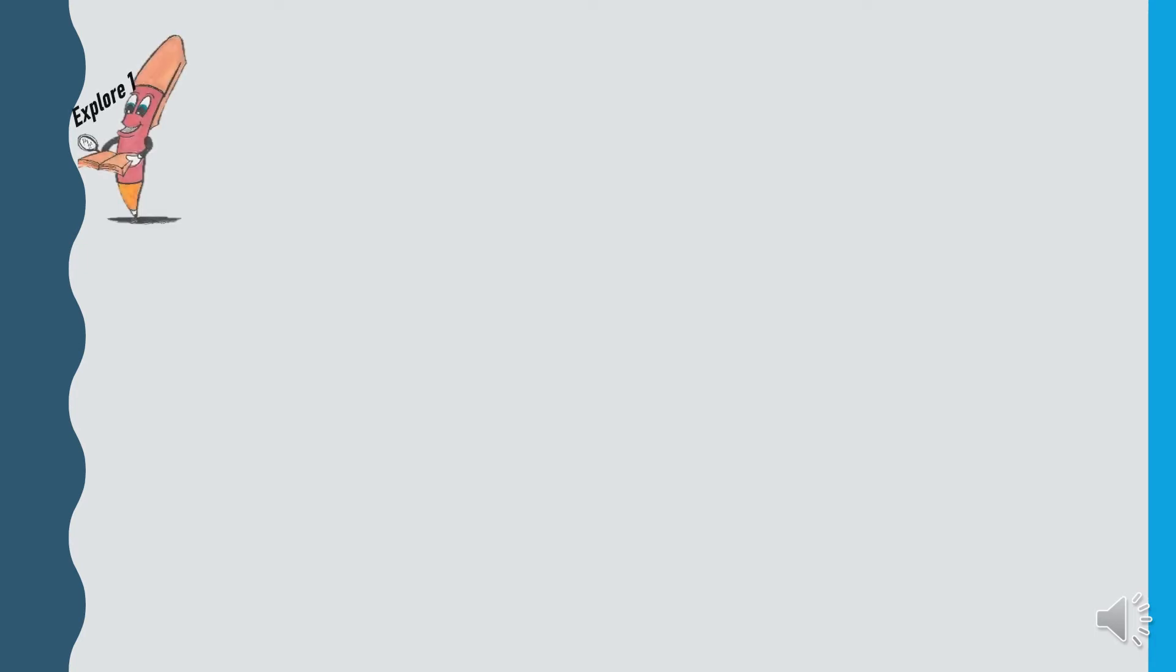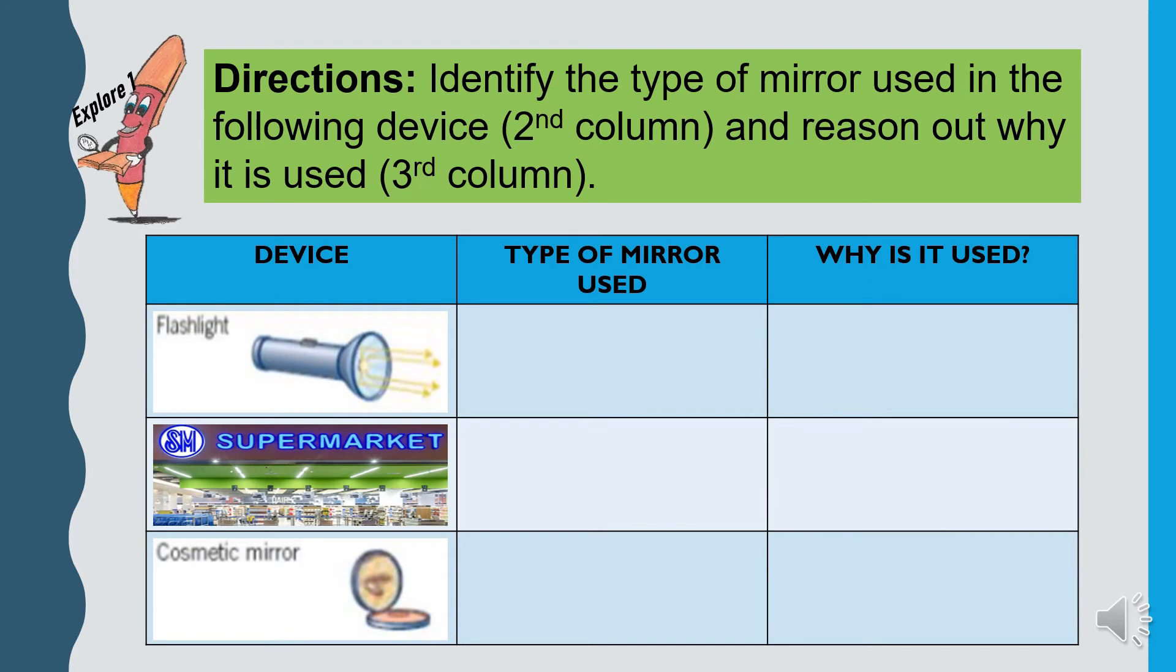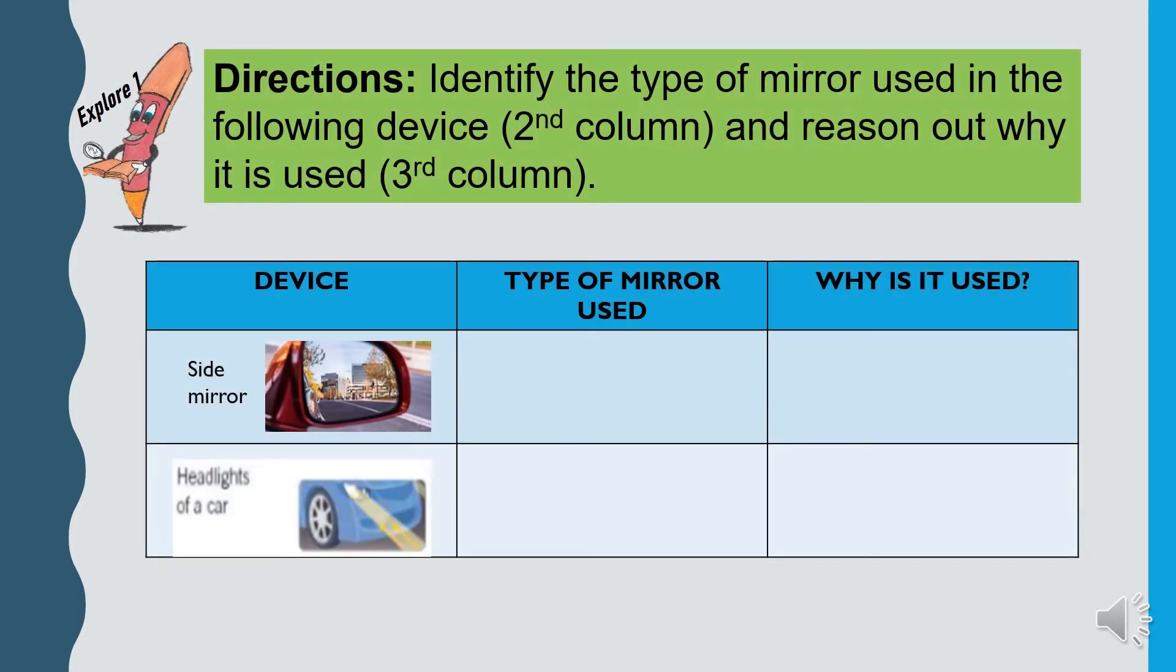Let's now explore! Identify the type of mirror used in the following device in column 2 and reason out why it is used in column 3. Flashlight, In supermarket, Cosmetic mirror, Side mirror of vehicles, Headlights of a car. Write your answers in your activity notebook.